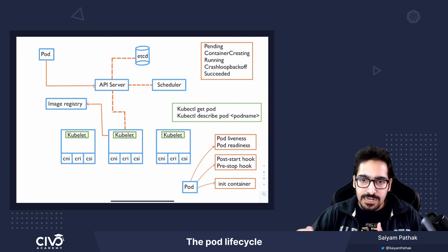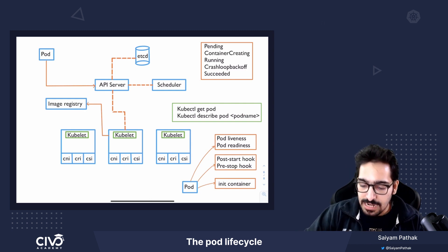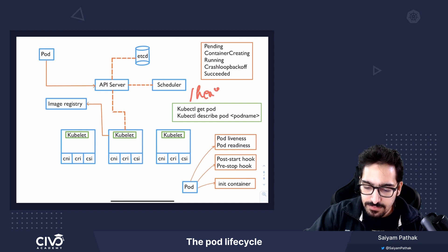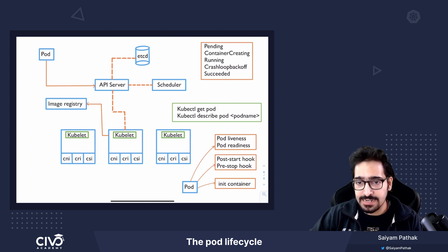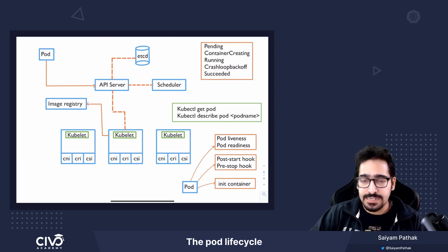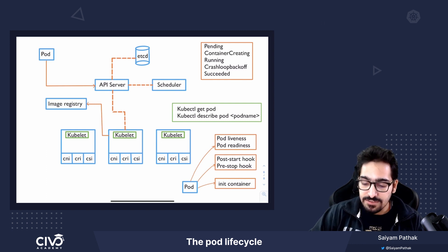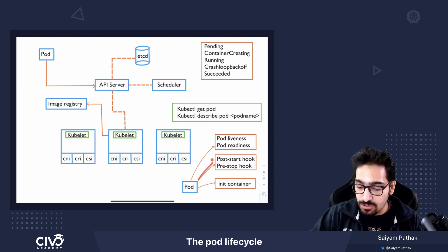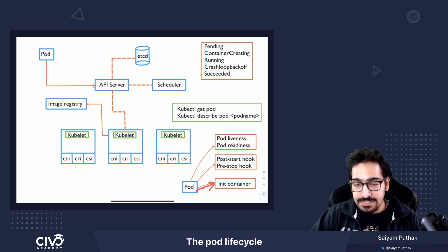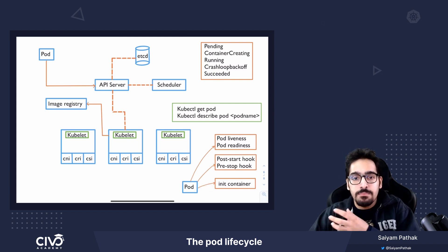Other advanced lifecycle features include liveness and readiness probes — endpoints like /health and /ready. The pod will keep on checking those, and if they fail it can lead to crash loop back off. There are also hooks: a post-start hook for actions right after the main container starts, and a pre-stop hook for actions just before it gets terminated. There is also something called an init container that runs before the main container actually starts.